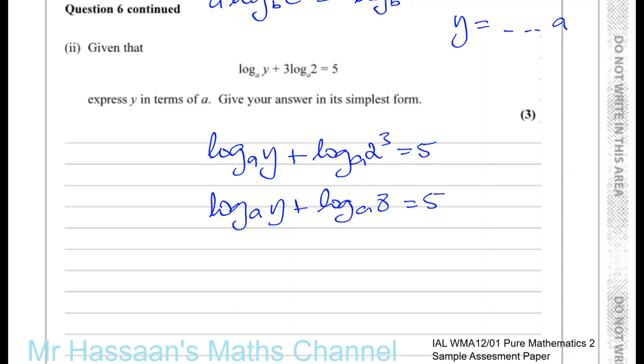Now I can join these together. These are added so I can use the addition law. So the addition law, like for example, if I have log to the base B of A plus log to the base B of C, I can write that as log to the same base B of A times C. So I can do the same thing here. I can write this as log to the base A of y times 8, which is 8y. And that's equal to 5.